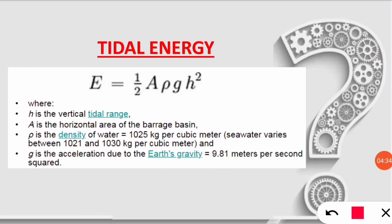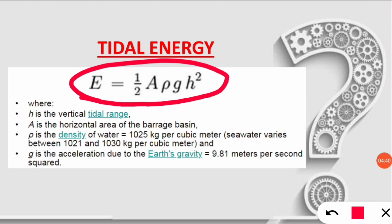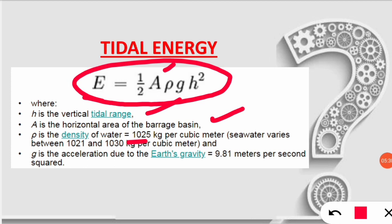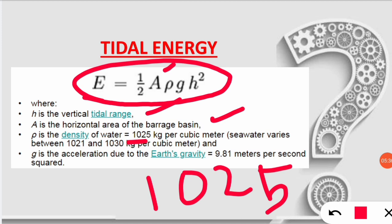To solve tidal energy questions, you must remember this formula: E = ½ × A × ρ × g × H². Here, H is the vertical tidal range, A is the horizontal area of the barrage basin, ρ is the density of water — typically 1025 kg per cubic meter for seawater unless otherwise given in the question — and g is Earth's gravity, 9.8 m/s².